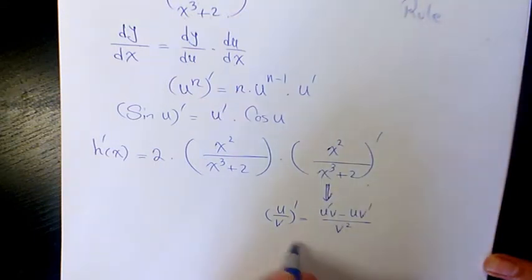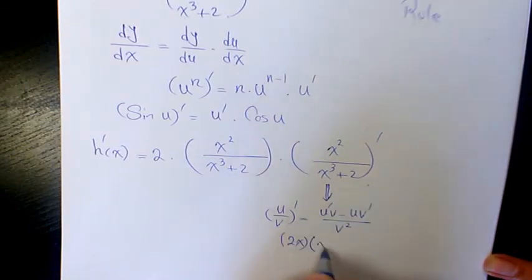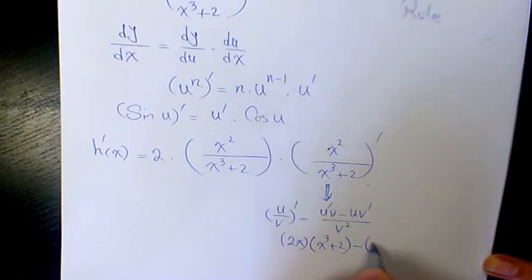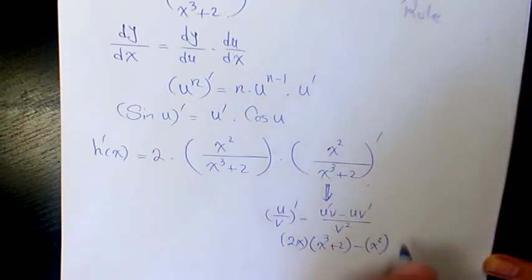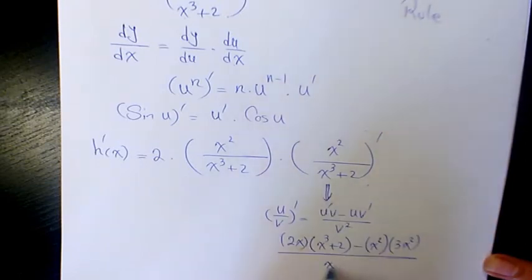Following the quotient rule, the derivative of x squared is 2x, times the denominator x cubed plus 2, minus u which is x squared, times the derivative of the denominator which is 3x squared, all divided by x cubed plus 2 to the power of 2.